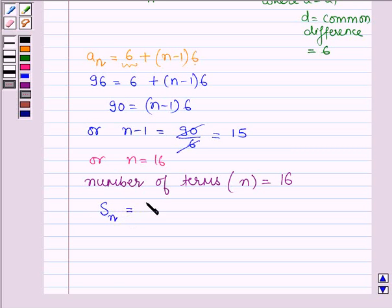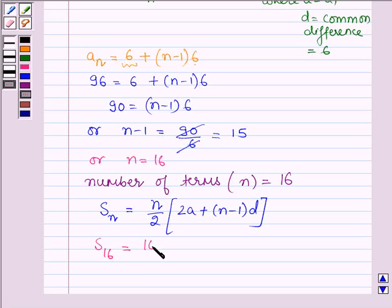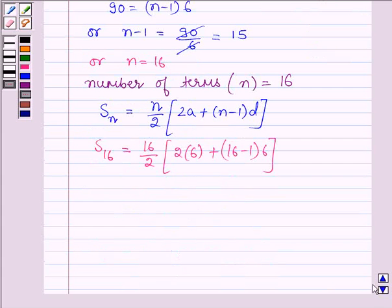the sum of n terms is given by n divided by 2 into [2a plus (n minus 1) into d]. And here we have to find the sum of first 16 terms. So, we have 16 divided by 2 into [2 times 6 plus (16 minus 1) into 6], which is further equal to 8 into [12 plus 15 into 6].